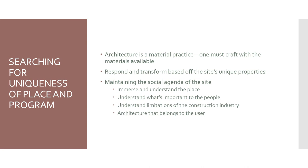Safdie's third and final design principle is searching for uniqueness of place and program. He believes architecture is a material practice that one must craft with the materials available, and that architecture must respond and transform based on the site's unique properties. One of the main tenets of his practice is maintaining the social agenda of the site. To do this, Safdie believes the architect must immerse themselves in and understand the place, understand what's important to the people, understand the limitations of the construction industry, and — most importantly — understand that architecture belongs to the user, not the architect.